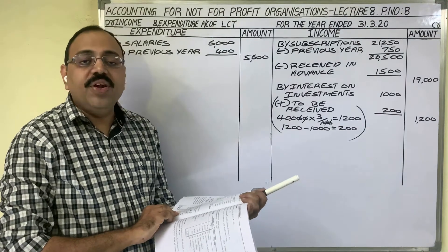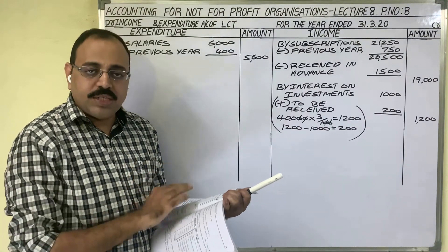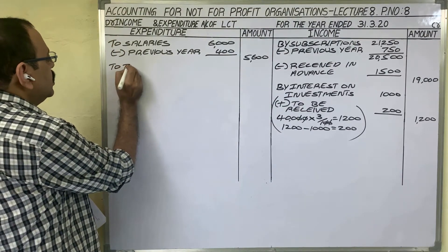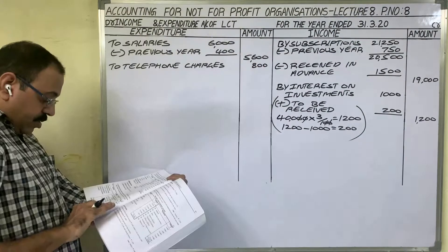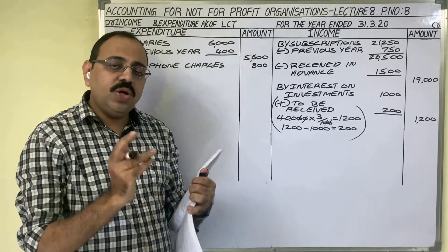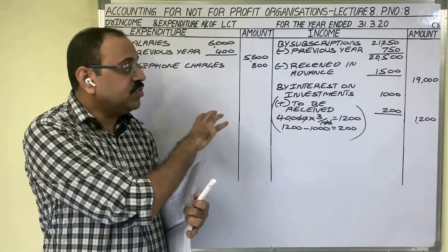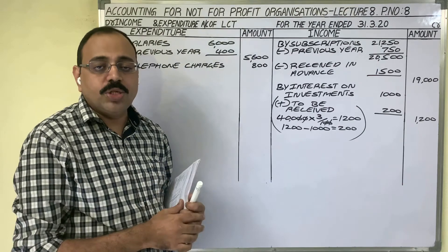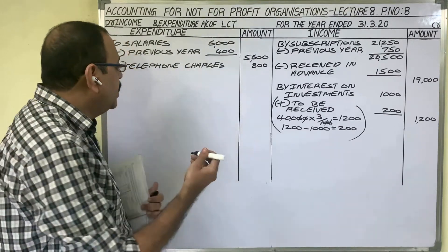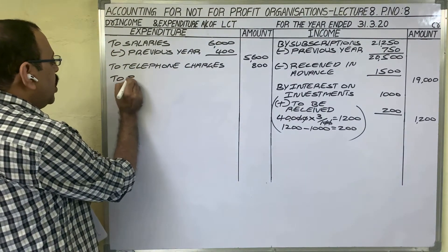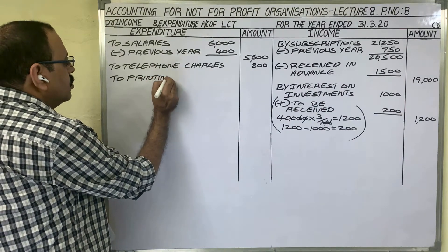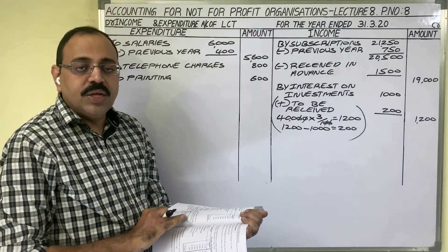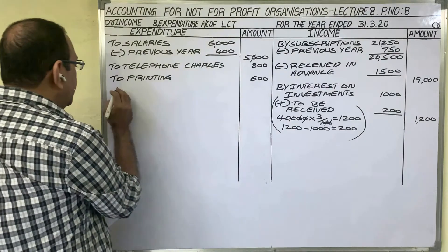Telephone charges 800 rupees — regular revenue expenditure, debit side. Printing 600 rupees — also regular revenue expenditure; the firm regularly spends on printing tickets or invoice books, so debit side. Travelling expenses 650 rupees — also regular revenue expenditure, debit side.